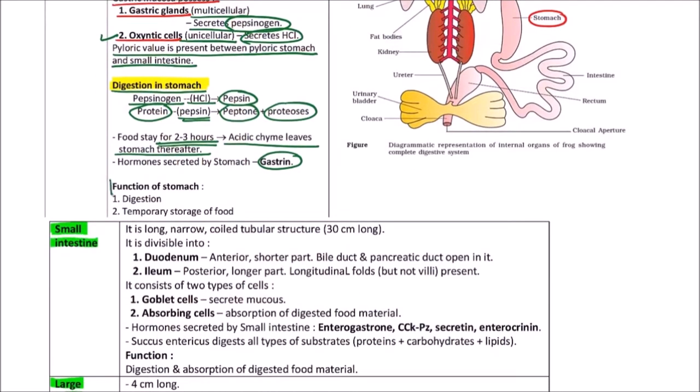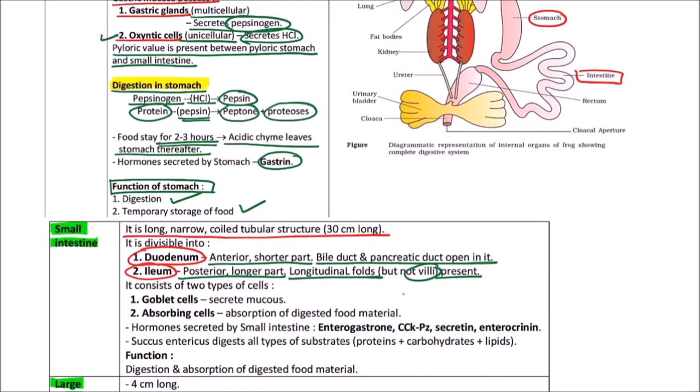Functions of stomach are digestion especially of proteins and temporary storage of food for two to three hours. Next is small intestine. We can observe small intestine here. It is narrow, long, coiled structure approximately 30 centimeters long. It is divisible into duodenum and ileum. Duodenum is anterior shorter part where bile duct and pancreatic duct open. Ileum is posterior longitudinal part with longitudinal folds which are not villi but increase surface area. It consists of two types of cells: goblet cells and absorbing cells.